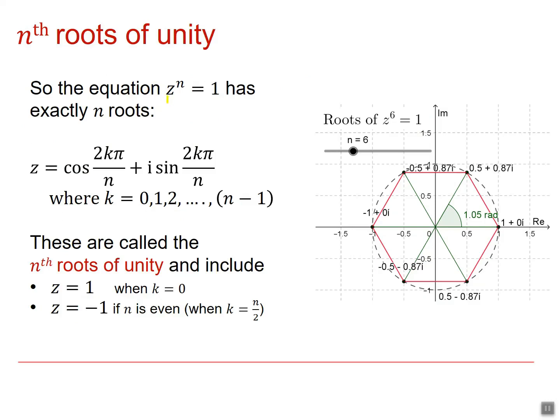So the equation z to the n equals 1 has exactly n roots. They're all of this form: cos of 2k pi by n plus i sine 2k pi by n, where k is an integer between 0 and n minus 1.